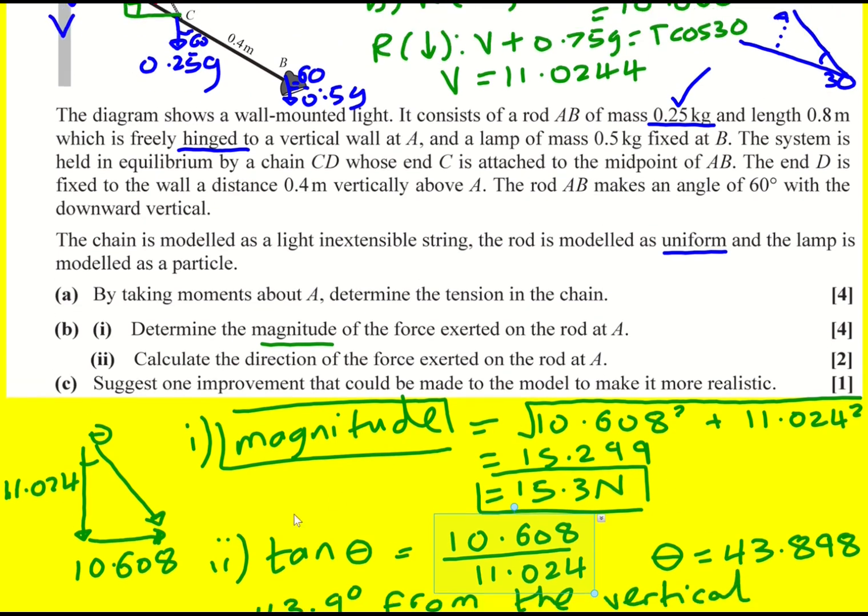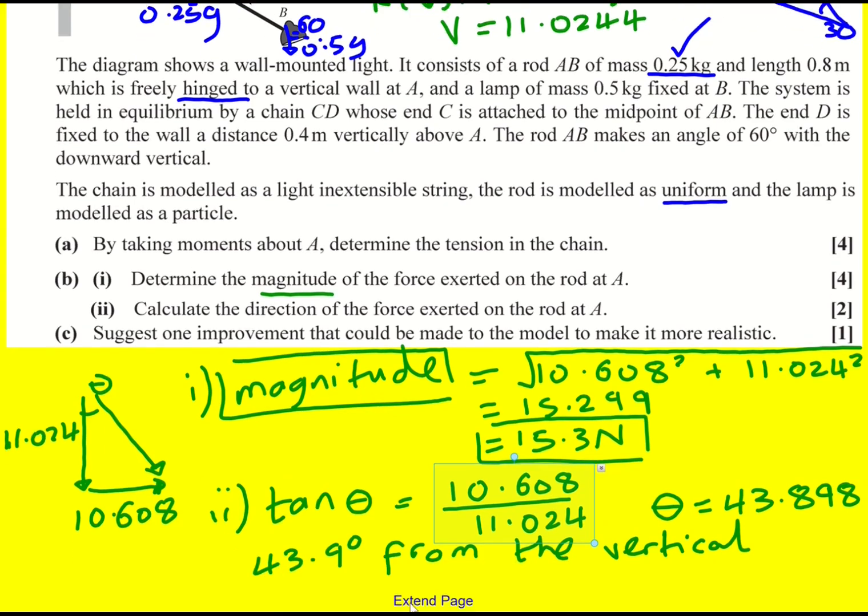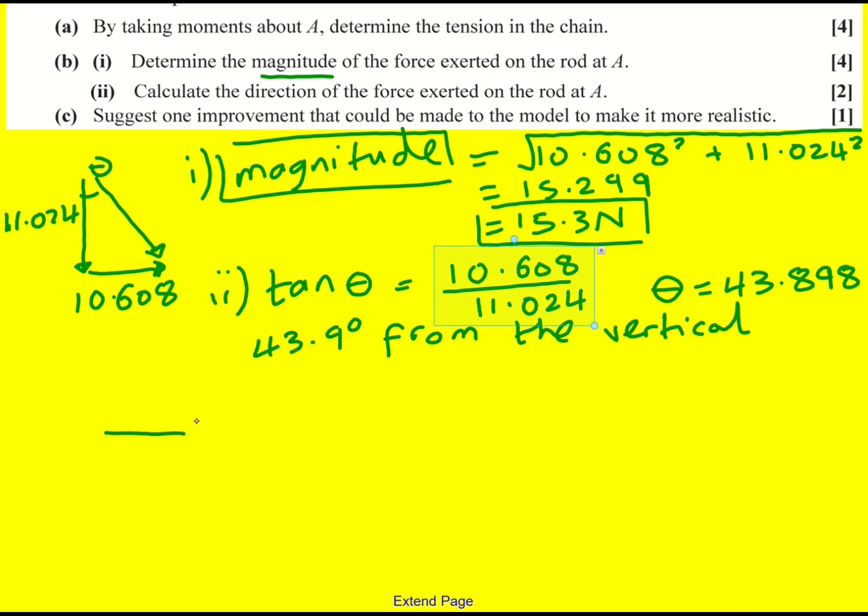So I could say 43.9 degrees from the vertical. In fact, when I did this originally, I don't know why I drew my triangle like that. So you could draw your triangle slightly differently. We could go along and down and then work out this angle, and it'd be 90 minus that 43.898, which would be 46.1 degrees below the horizontal. Or yeah, below the horizontal. So either of these should be okay, as long as you kind of get the angle and then specify what you're comparing it to. It doesn't, it doesn't specify that we have to use the horizontal or the vertical.